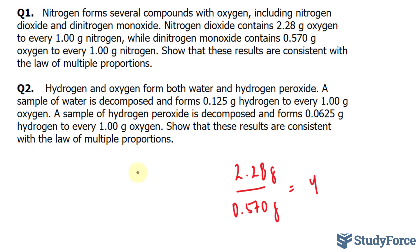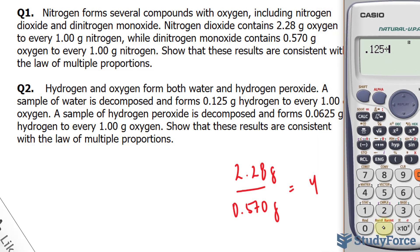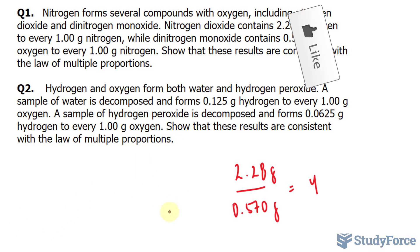Once again, I'll take the larger of the two numbers, which is this, and divide it by the smaller number. 0.125 divided by 0.0625, and that gives me 2. For the same reason as question 1, since 2 is a small whole number, this shows that it's consistent with the law of multiple proportions.